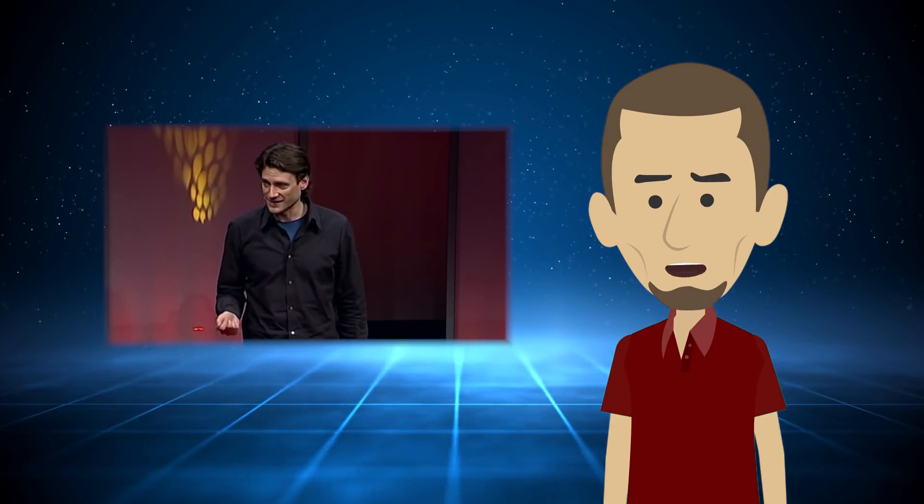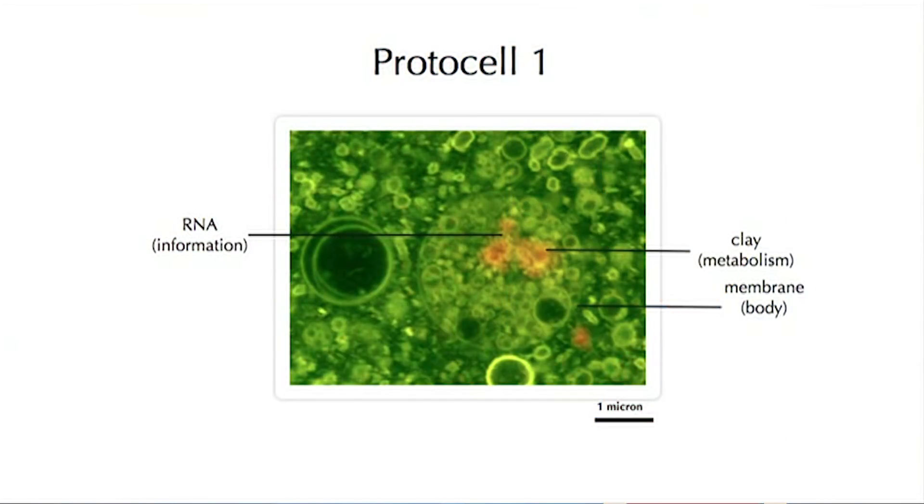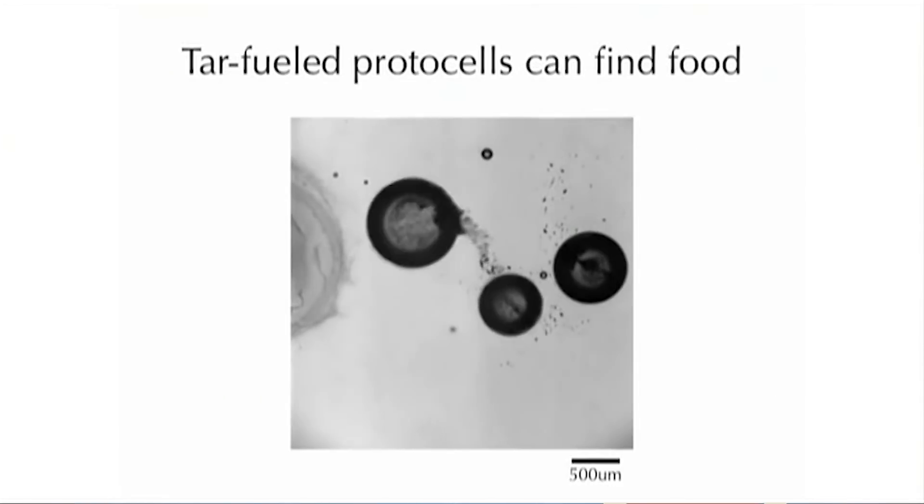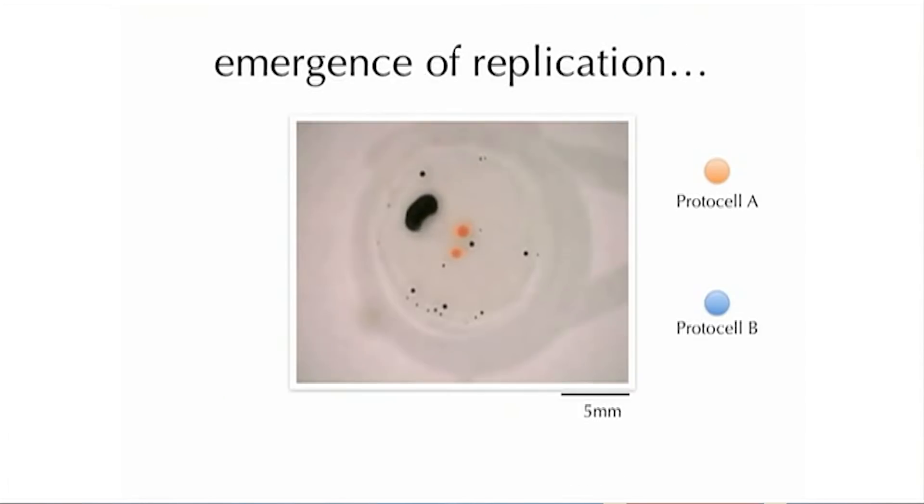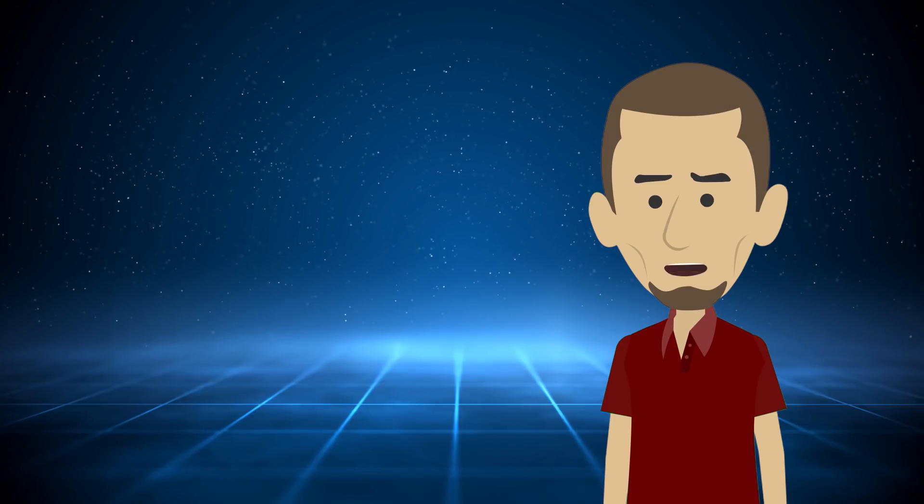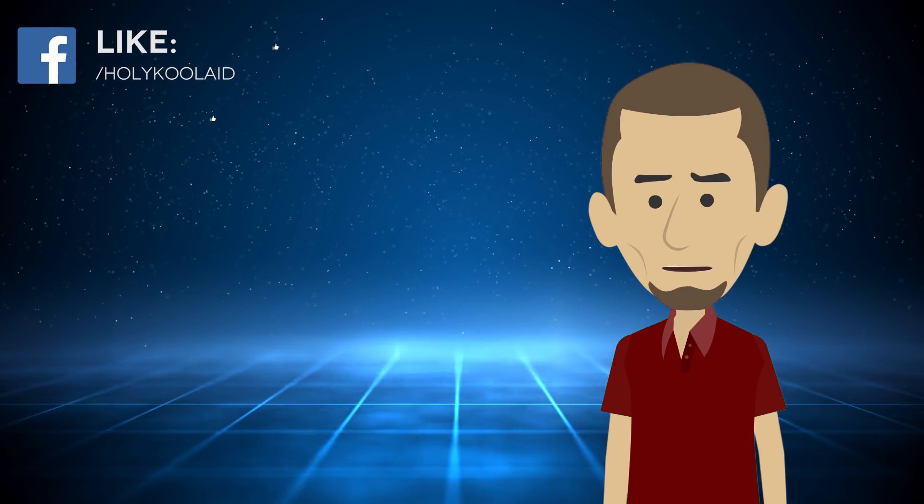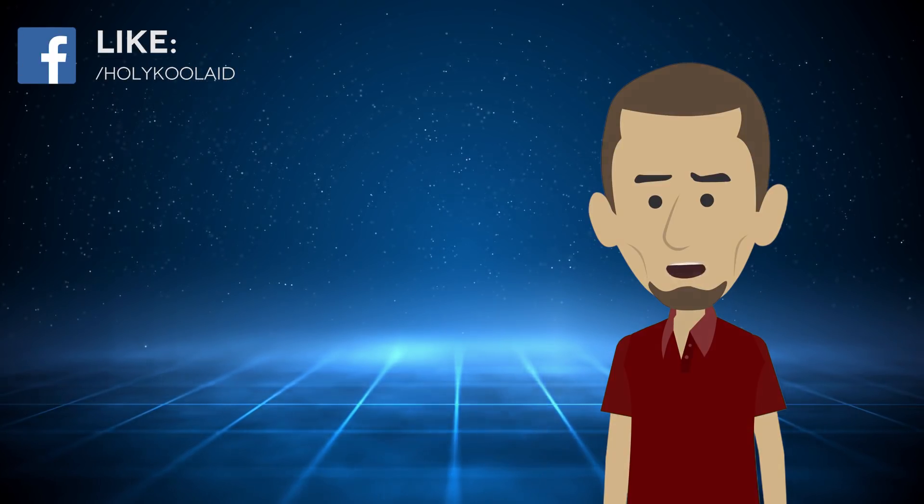In the early 2000s, Martin Hanzik and his team created simple protocells that moved around in a petri dish, responded to stimuli, sought out food, and underwent cell splitting similar to reproduction. But these were very simplistic, and even lacked the DNA necessary to pass traits from one generation to the next.